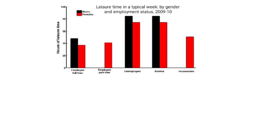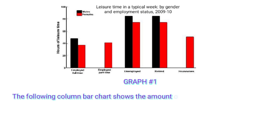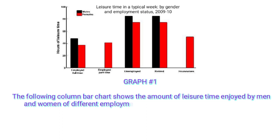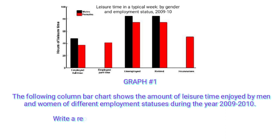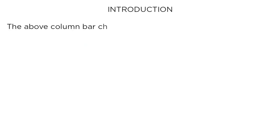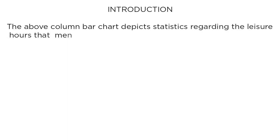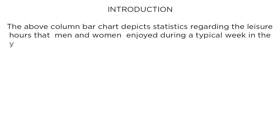Chapter two: graphs, diagrams, and maps. Graph one: the following column bar chart shows the amount of leisure time enjoyed by men and women of different employment statuses during the year 2009 to 2010. Write a report describing the information shown below. The above column bar chart depicts statistics regarding the leisure hours that men and women enjoyed during a typical week in the year 2009 to 2010.